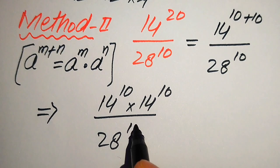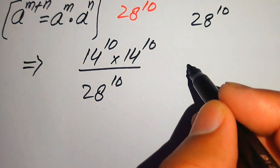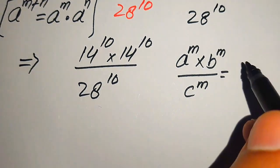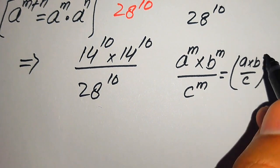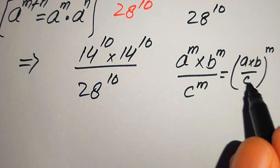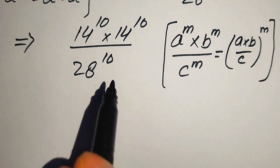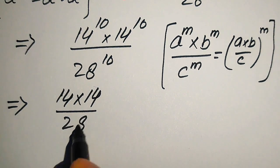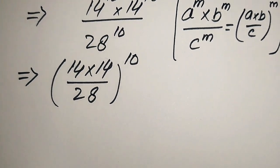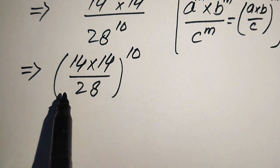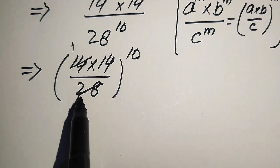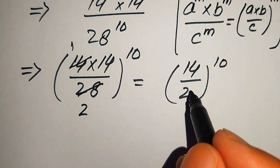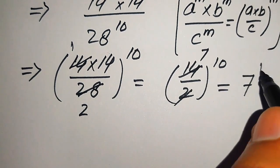We then apply the exponent law: a^m × b^m ÷ c^m = (a × b ÷ c)^m, combining all terms to get (14 × 14 ÷ 28)^10. Simplifying inside: 14 × 14 ÷ 28 = 14 ÷ 2 = 7, so the expression reduces to 7 to the power of 10.